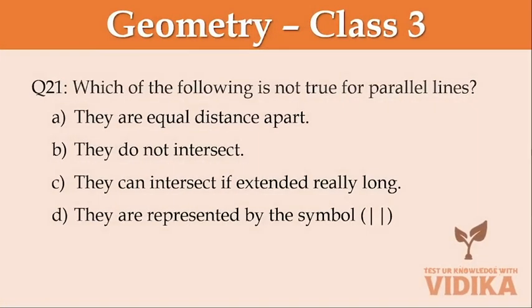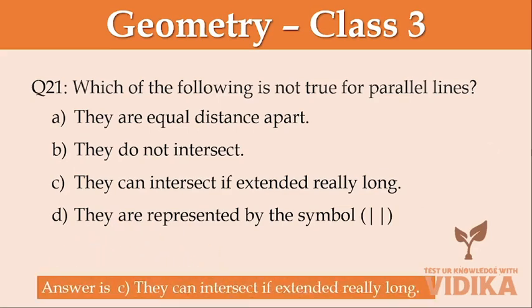Which of the following is not true for parallel lines? Option A they are equal distance apart. Option B they do not intersect. Option C they can intersect if extended really long. Option D they are represented by a symbol.